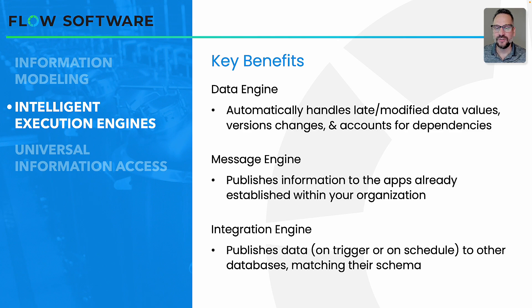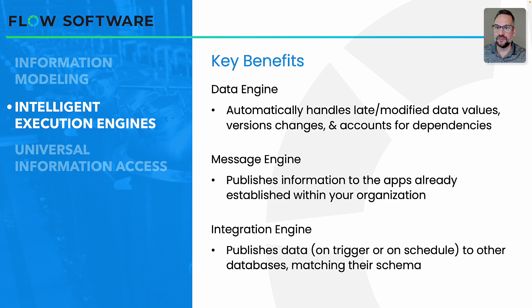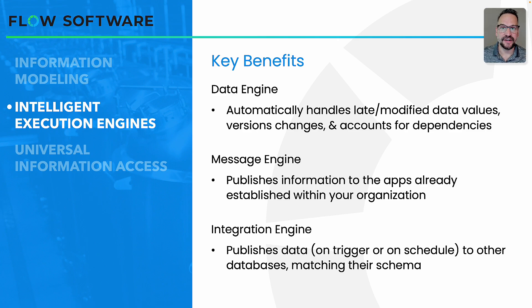Flow's data engine versions every result. So even if it does rerun, you don't lose the original information — it sits in the version history and your users can see it. The message engine makes sure that we publish information where your teams are already consuming that information. This is important for culture — we don't want to move someone's cheese. Where they're already working, we want to put this newly calculated information at their fingertips: Slack channels, Microsoft Teams, email, SMS, SharePoint. And then the integration engine handles how we get that data into other applications, databases, cloud platforms, data lakes, back to SCADA systems or historians, to MQTT brokers — on trigger or on schedule as defined in the information model.